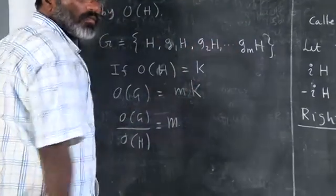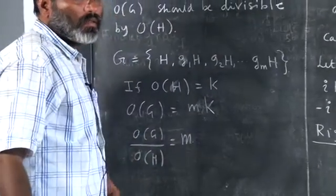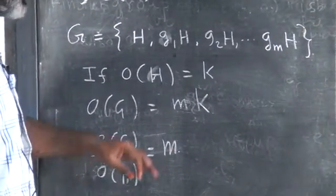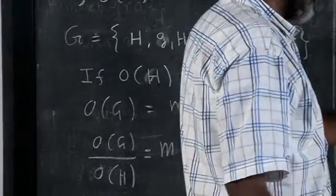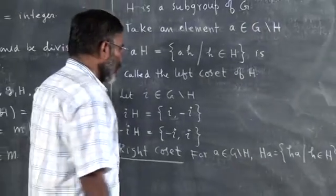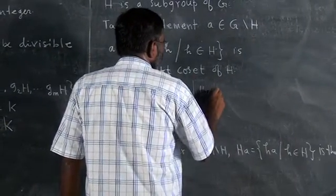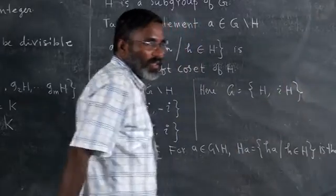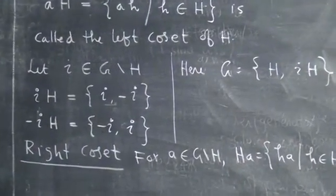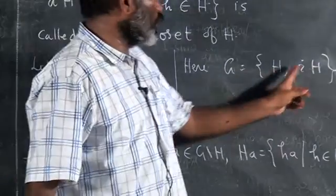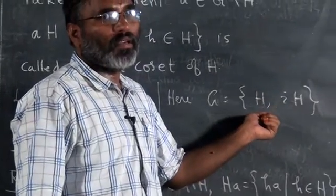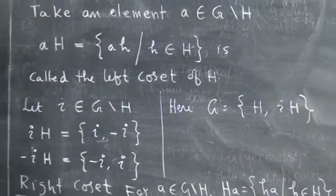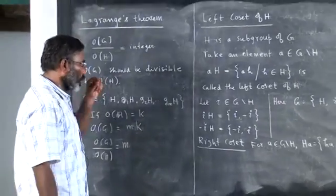How many elements give distinct cosets? In this example, G = H ∪ iH, so there are 2 cosets. Total order is 4, and 4 is divisible by 2. So the order of the group is divisible by the order of the subgroup. This is called Lagrange's theorem. The whole group can be divided into the subgroup and its cosets.